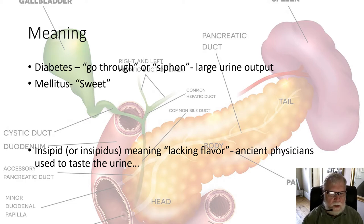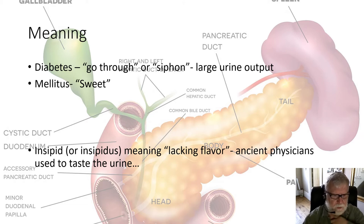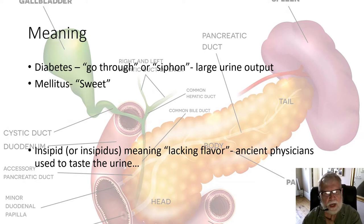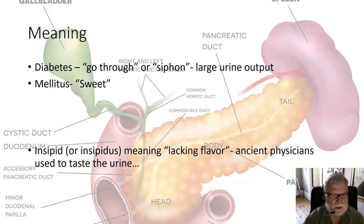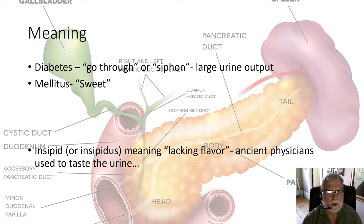Years ago, they used to actually taste the urine to see if somebody had diabetes. Diabetes insipidus, as you know, is a substantial urine output — usually around 30 liters or so a day — associated with an ADH problem, a lack of ADH. Those people will have substantial urine output, but if you taste it, it's insipid, meaning it doesn't have flavor or taste. We've actually transitioned that word to describe a person being uninteresting, but the original meaning was lacking flavor.